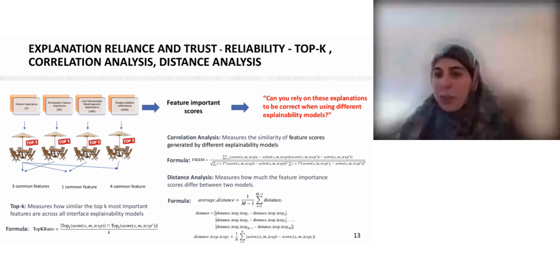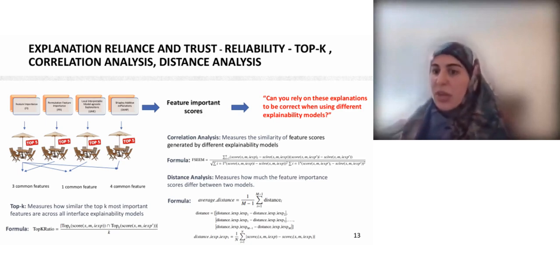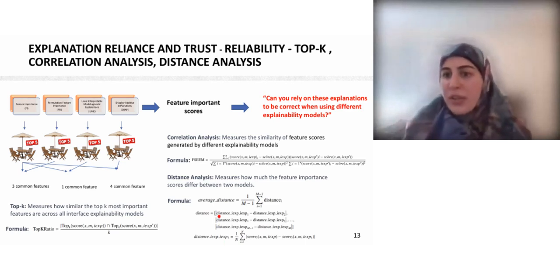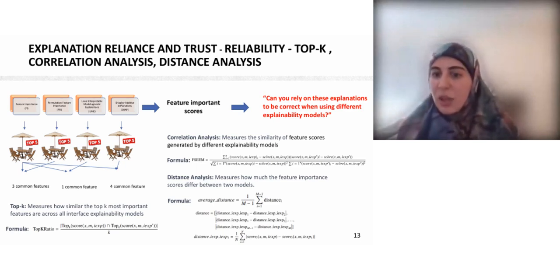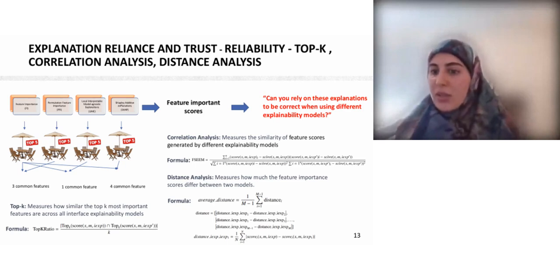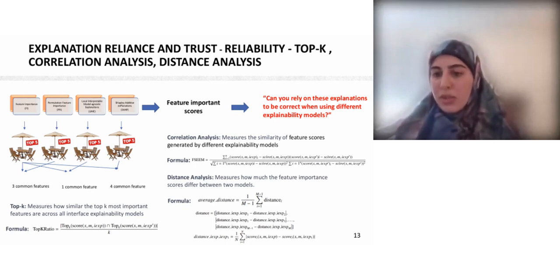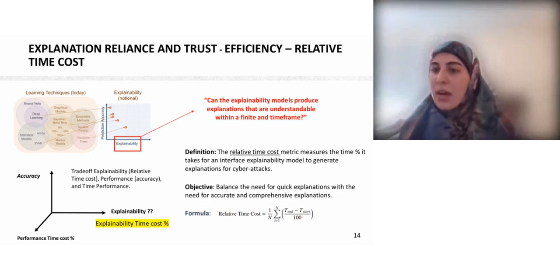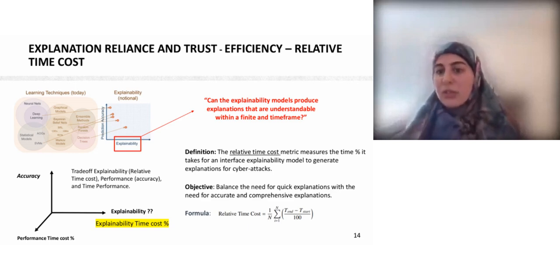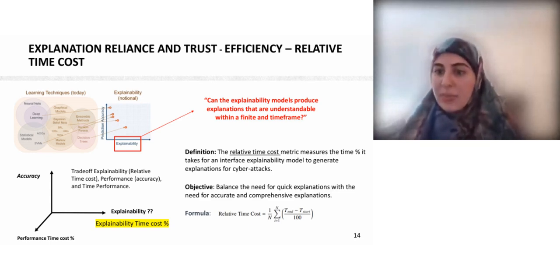To answer this research question, we proposed different measurements for quantitatively evaluating the metric properties. The first is the reliability metric, where we defined three measurements: Top-K, correlation analysis, and distance analysis. Top-K measures how similar the top K most important features are across interface explainability models. Correlation analysis measures the similarity of feature scores, while distance analysis measures the difference between feature scores between models.